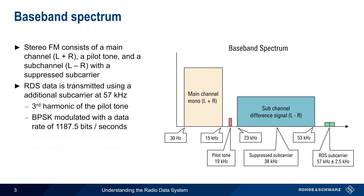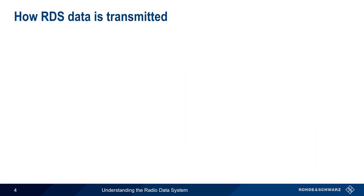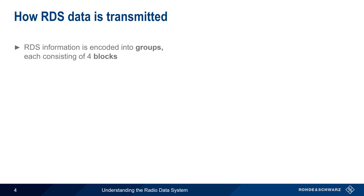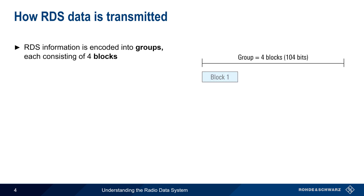And after filtering, the RDS subcarrier occupies a bandwidth of approximately 5 kHz. The digital information in the RDS subcarrier is encoded into groups, each of which contains four blocks.